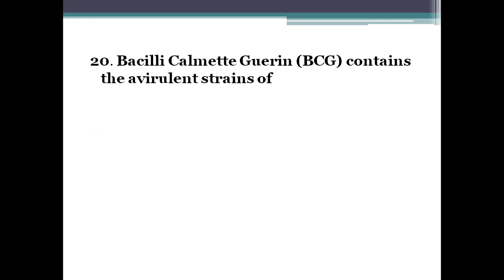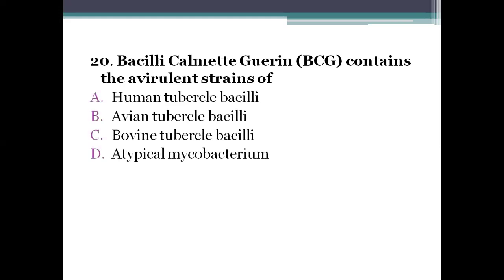Next question: BCG vaccine (Bacille Calmette-Guérin vaccine) consists of virulent strains of option A, human tubercle bacillus. Option B, avian tubercle bacillus. Option C, bovine tubercle bacillus. Option D, atypical mycobacterium. The right answer is option C, bovine tubercle bacillus. BCG is a heterologous vaccine consisting of Mycobacterium bovis that gives protection from Mycobacterium tuberculosis. It consists of attenuated strains of bovine tubercle bacillus. Thank you.